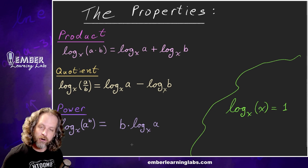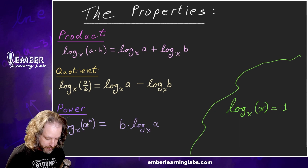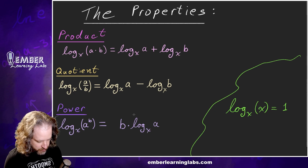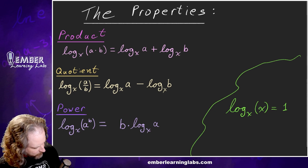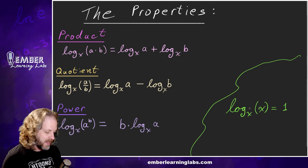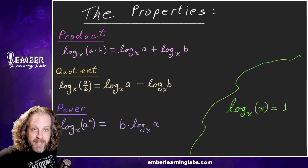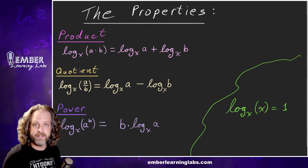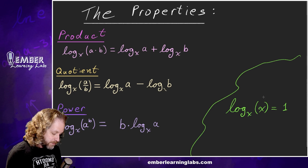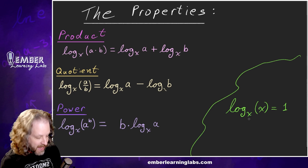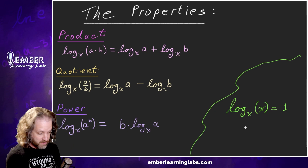This last property is the power property of logarithms. If we have the log of something to a power — so we've got an exponent in here — we can take and pull that exponent to the front, which is exceptionally useful. As a bonus: if we have the base and the argument matching, that equals one, which we saw kind of in the last lesson. If we have log base X of X, that equals one because X to the first equals X. So those are all of the properties of logarithms we're going to use.